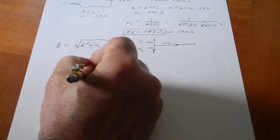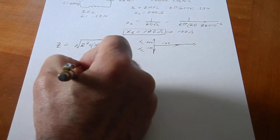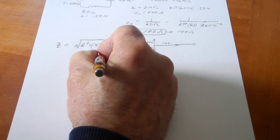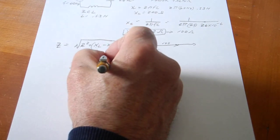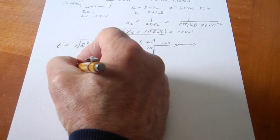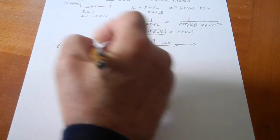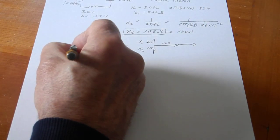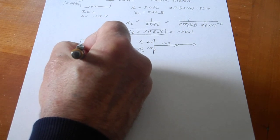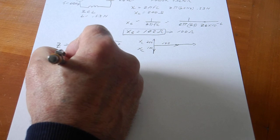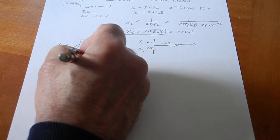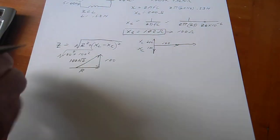So, we have an R of 100. We have a reactive component of 100. And so, that gives us 100 squared plus 100 squared square root. So, we know that's 100 squared of 2.